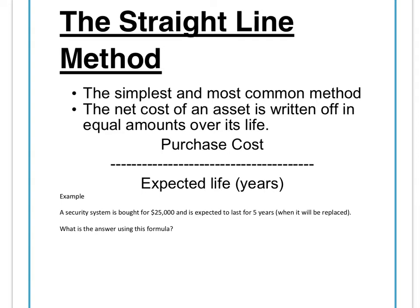The straight line method is simply the purchase cost divided by the number of years you expect the fixed asset to last. So if we look at a security system bought for $25,000 expected to last five years, we divide $25,000 by five, which means we depreciate the alarm system by $5,000 each year.